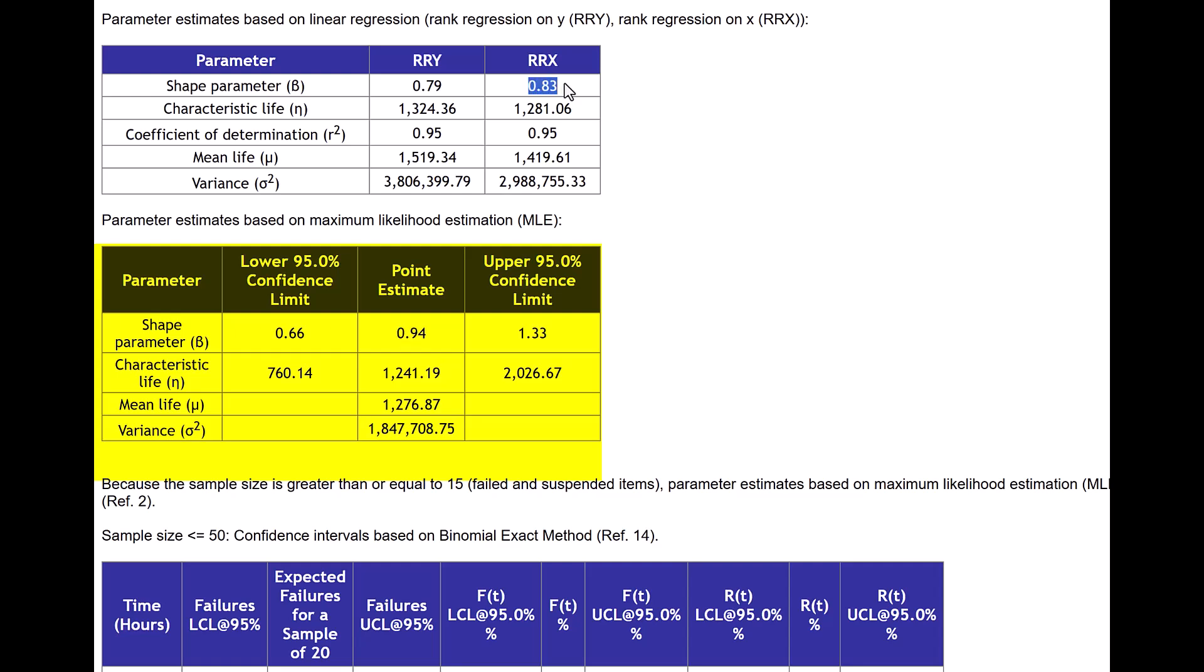We can see the parameter estimates using the MLE method as well. And you can see that the point estimate of the shape parameter is 0.94 with lower confidence bound of 0.66 and upper confidence bound of 1.33. The characteristic life eta is estimated at 1241.19.